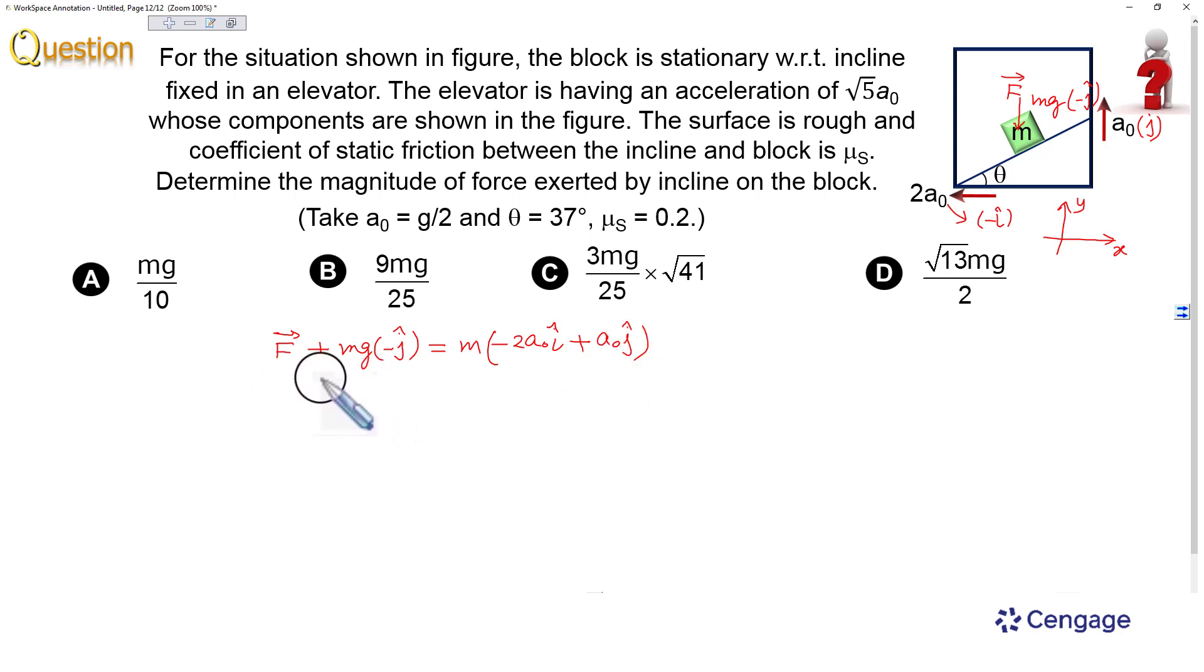We can rearrange this equation because we are interested to calculate F vector. This F vector should be equal to, after rearrangement, m times (-2a₀i + (a₀ + g)j).